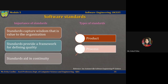There are two related types of software engineering standards that may be defined and used in software quality management. The first is product standards. These apply to software products being developed. They include document standards such as the structure of requirements documents, documentation standards such as a standard comment header for an object class definition, and coding standards which define how a programming language should be used.